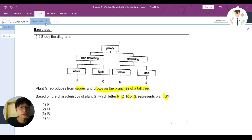So the first thing we should take a look at is the two key words here: spores and grows on the branches of a tall tree.